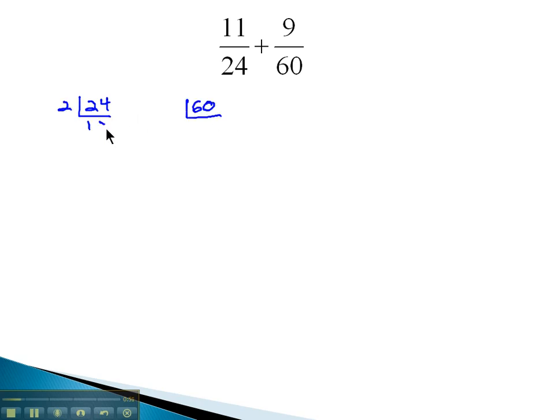2 goes into 24, 12 times. 2 goes into 12, 6 times, and 2 goes into 6, 3 times, which divides by 3, 1 time. And so we get the prime factorization of 2 cubed times 3.